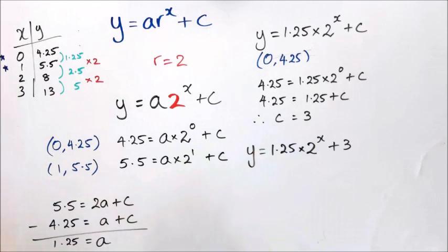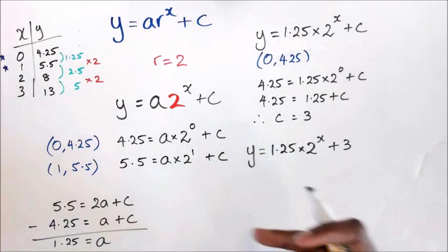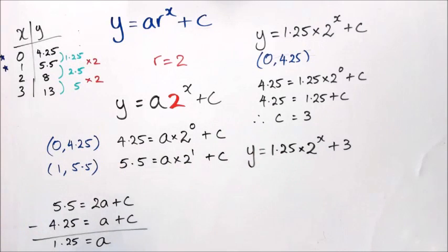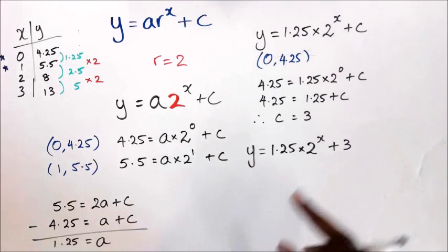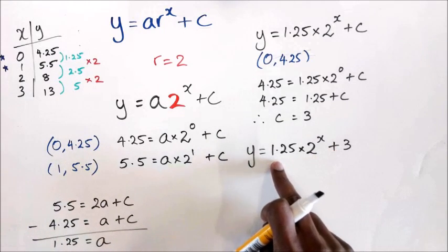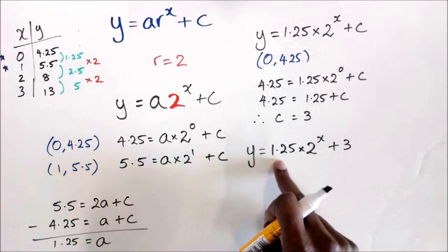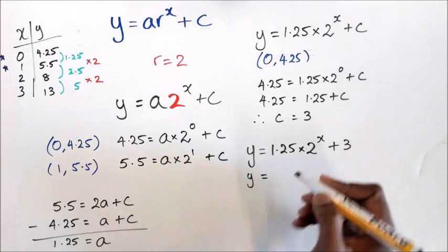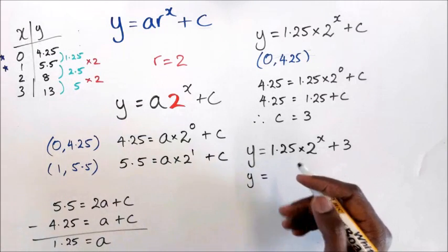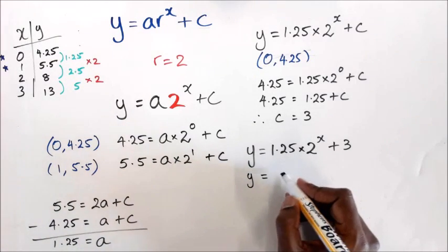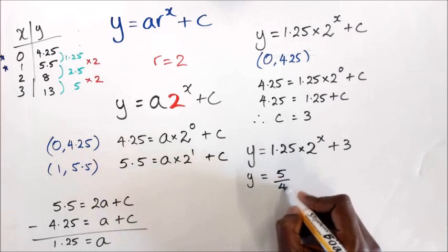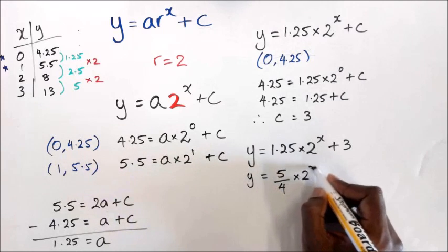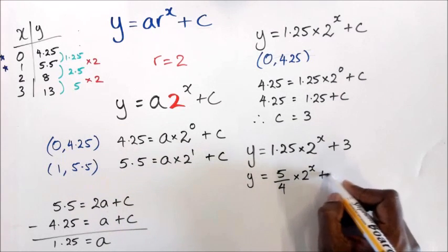If you do this question, you might get a slightly different answer because of the horizontal movement. The way to handle that is to look at 1.25, which can be written as the fraction 5 over 4, times 2 to the power of x plus 3.